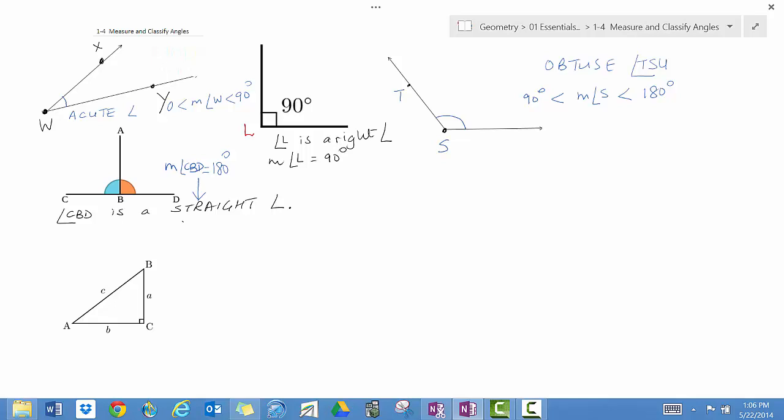So, any angle between 0 and 90 is acute. If an angle is at exactly 90 degrees, it's right. If it is between 90 and 180, it's obtuse. And if it is exactly 180 degrees, it is straight.